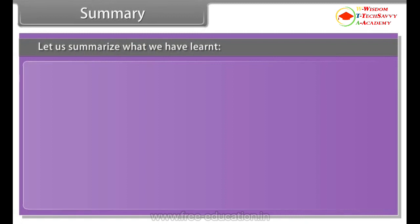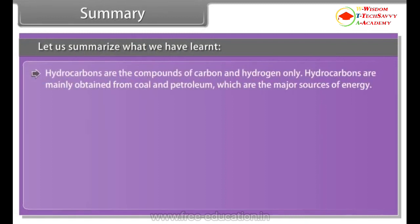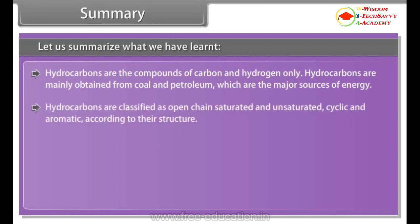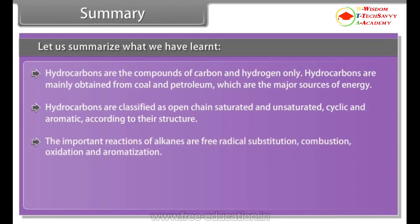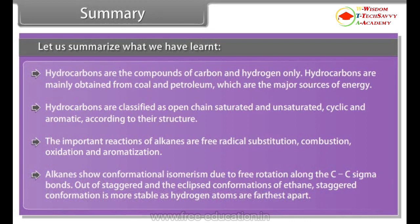Summary. Let us summarize what we have learned. Hydrocarbons are the compound of carbon and hydrogen only. Hydrocarbons are mainly obtained from coal and petroleum which are the major source of energy. Hydrocarbons are classified as open-chain saturated and unsaturated, cyclic and aromatic according to their structure. The important reactions of alkanes are free radical substitution, combustion, oxidation and aromatization. Alkanes show conformational isomerism due to free rotation along the C-C sigma bonds. Out of staggered and eclipsed conformations of ethane, staggered conformation is more stable as hydrogen atoms are farthest apart.